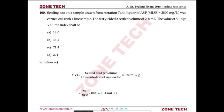Question number 100: a settling test on a sample from an aeration tank in an activated sludge process with MLSS = 2800 mg/L was carried out with a 1-liter sample. The settled volume was 200 mL. Sludge Volume Index (SVI) = (settled volume mL/L) / (MLSS mg/L) × 1000 = (200/2800) × 1000 = 71.43 mL/g. Answer: C.